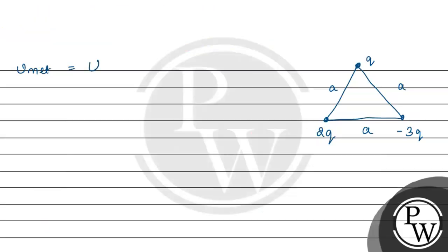Net potential energy किस किस की वजह से होगी? एक होगी potential energy due to Q and 2Q interaction, plus electrostatic potential energy due to 2Q and minus 3Q interaction, plus potential energy due to Q and minus 3Q interaction.